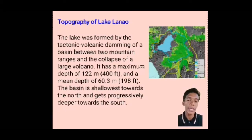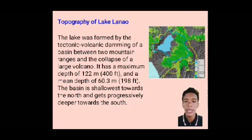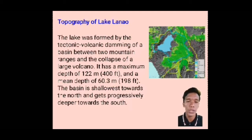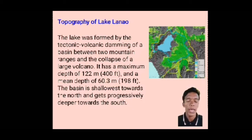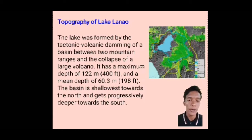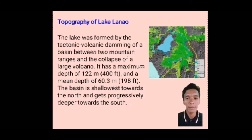The lake was formed by tectonic and volcanic activity, the formation of a basin between two mountain ranges and the collapse of a large volcano. It has a maximum depth of 122 meters or 400 feet and a mean depth of 60.2 meters or 128 feet. The basin is shallowest toward the north and gets progressively deeper towards the south.